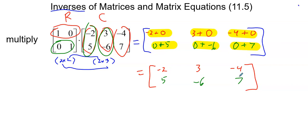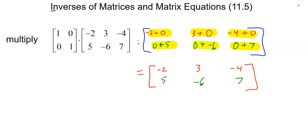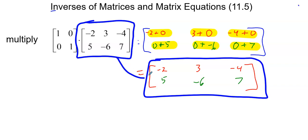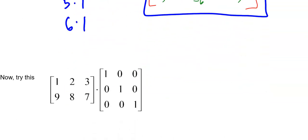I don't know if that surprised you, but one thing you may notice is: does this matrix look familiar? Is it pretty much exactly the same as that matrix? It is — it's the same matrix. So multiplying by this matrix is kind of like doing 5 times 1 or 6 times 1. Multiplying by 1 doesn't really do anything. This square matrix with those 1's and 0's doesn't really do anything — you just get the same answer you started with.